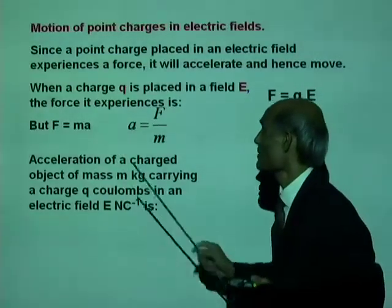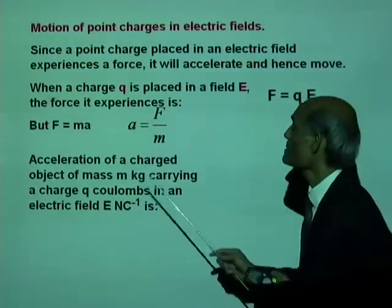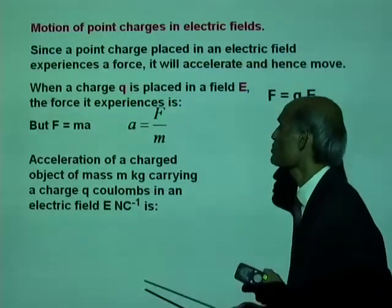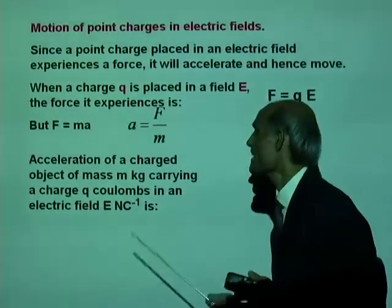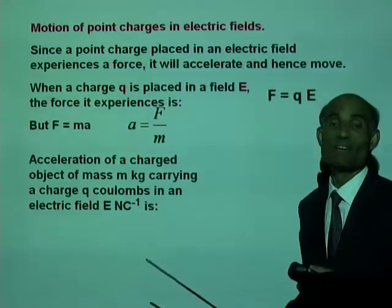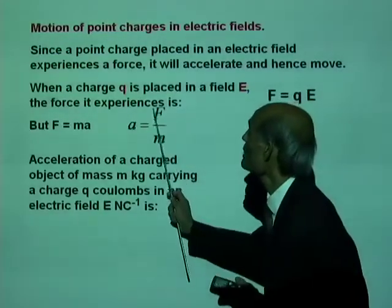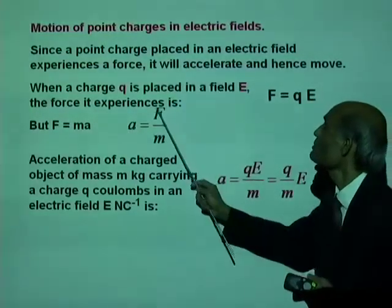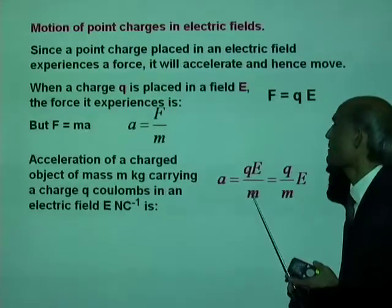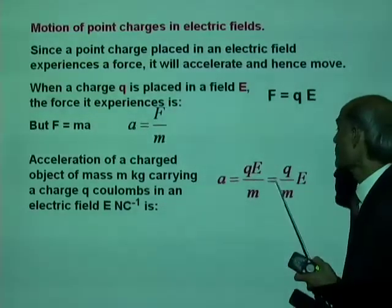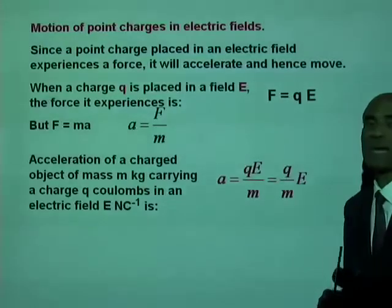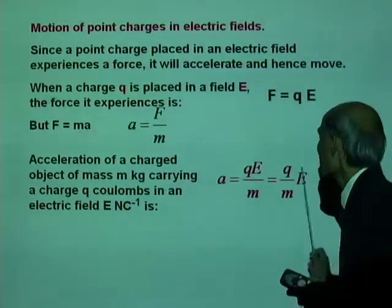Now, you'll get acceleration of a charge of mass M, carrying a charge Q coulombs in an electric field E. If you replace this F by Q times E, you'll get A equal to QE divided by M, and I'm going to write it as Q over M multiplied by E. A very important relation.